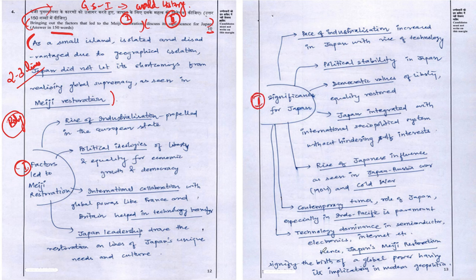Looking at the conclusion, it has been written very crisp and to the point — just two and a half lines. This is one of the ideal ways to write a conclusion for an answer.